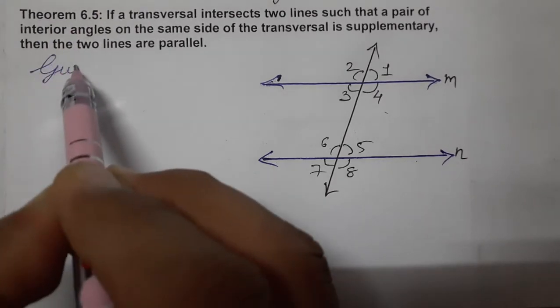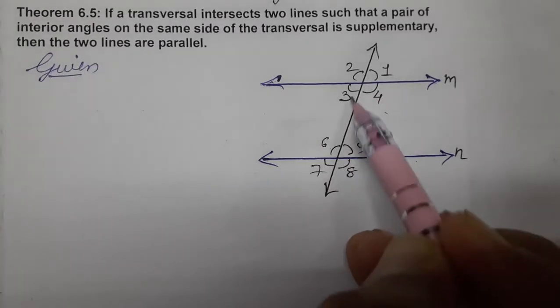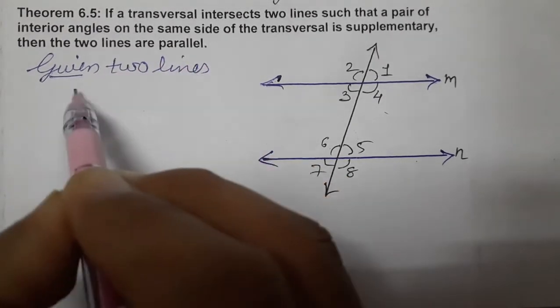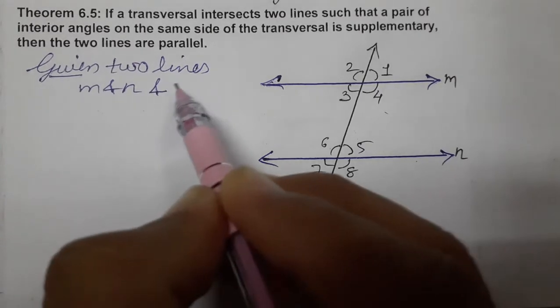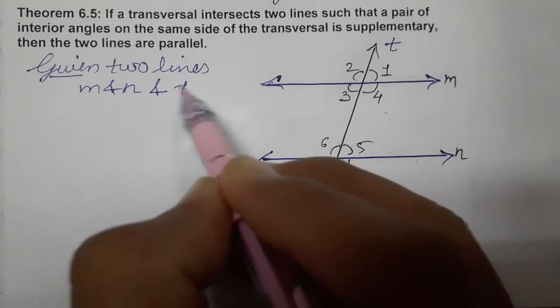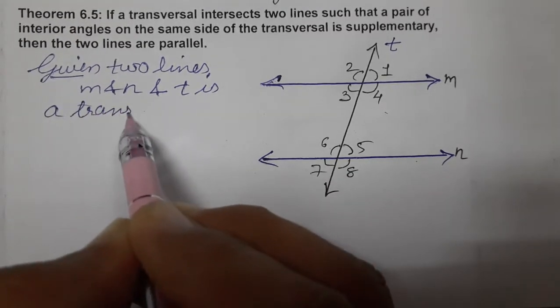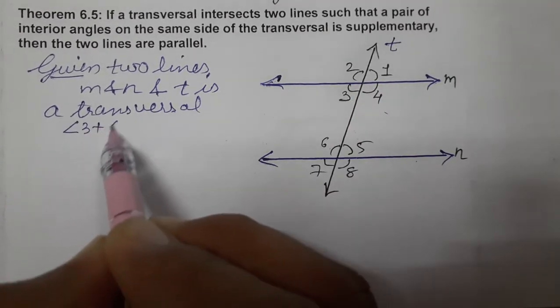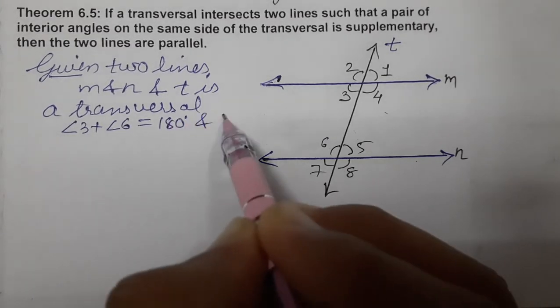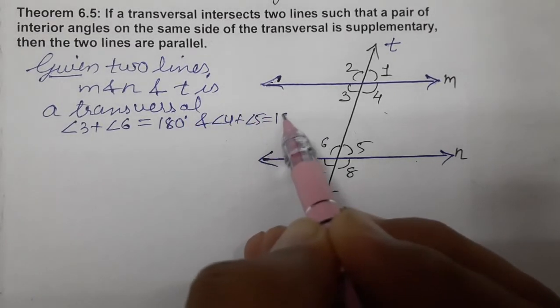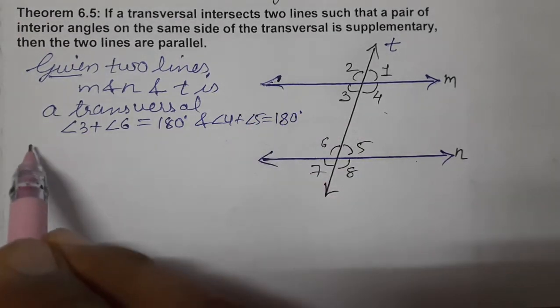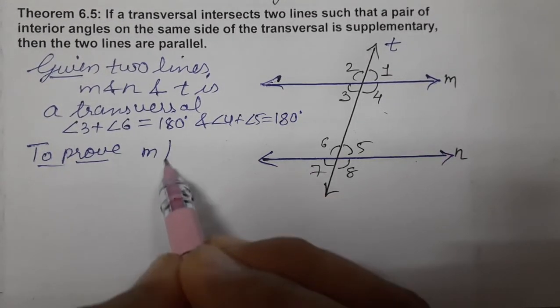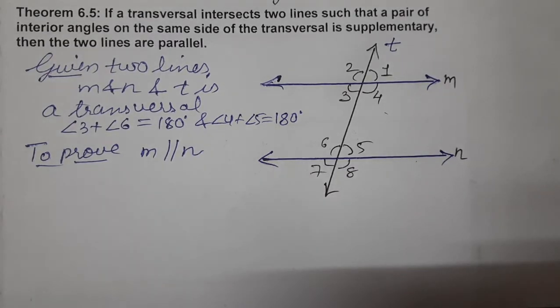Given: two lines M and N, and T is a transversal. Angles on the same side of the transversal are supplementary. To prove: M is parallel to N. So let's start the proof.